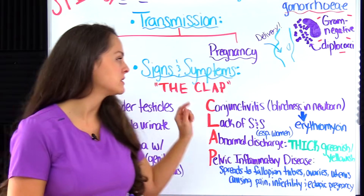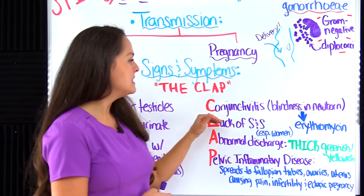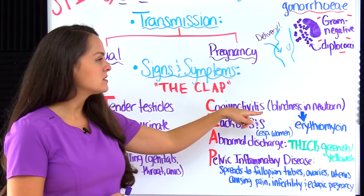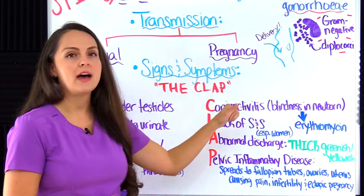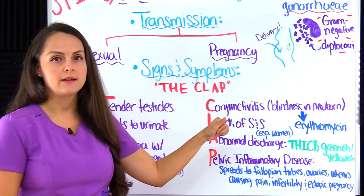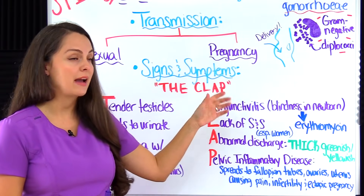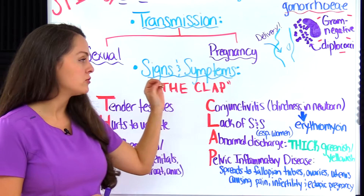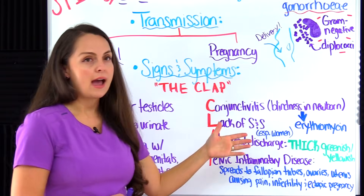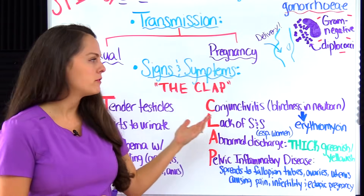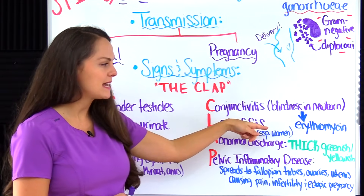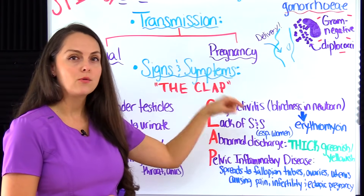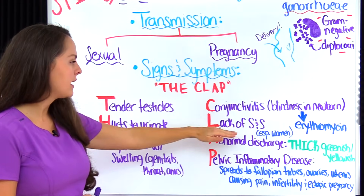C stands for conjunctivitis, an eye infection. This mainly occurs in newborns who came into contact with the bacteria in the vaginal canal. The good news is there is a cure — after birth, many babies receive erythromycin ointment in their eyes to prevent this.